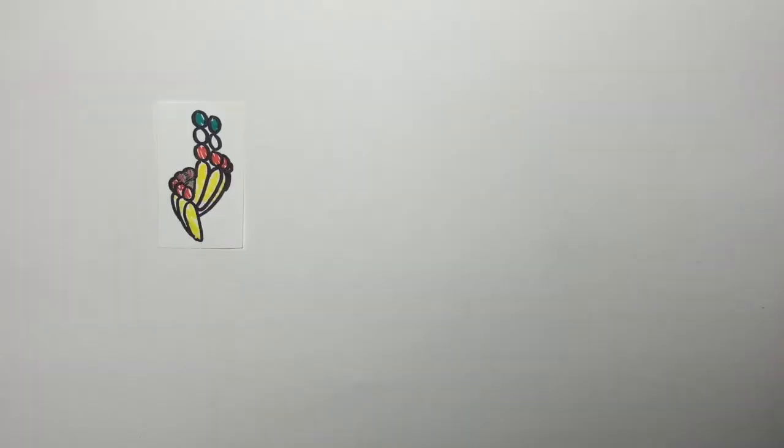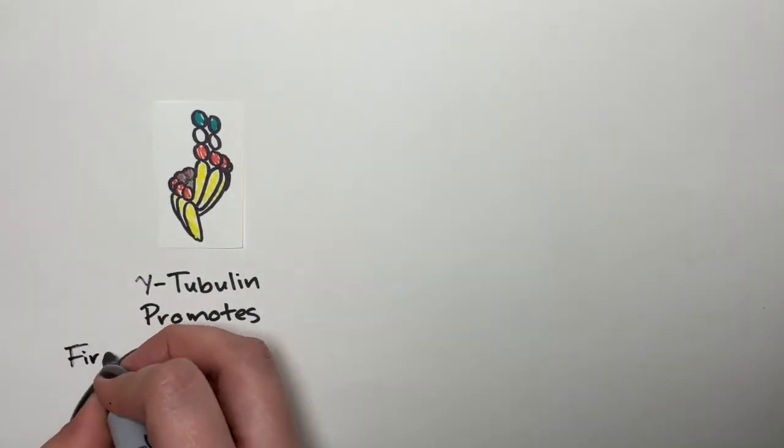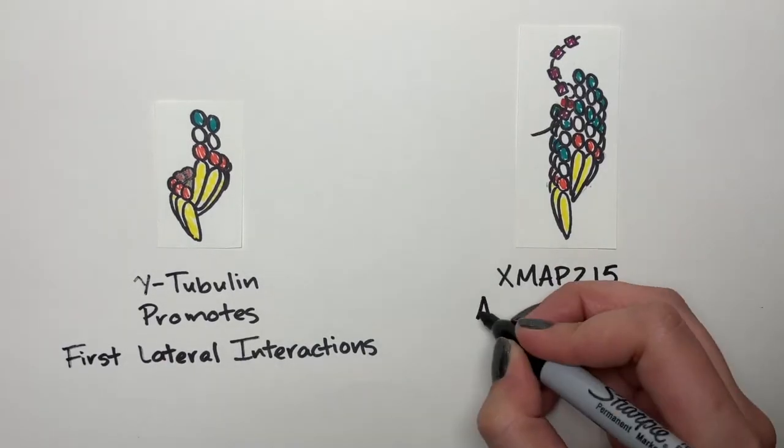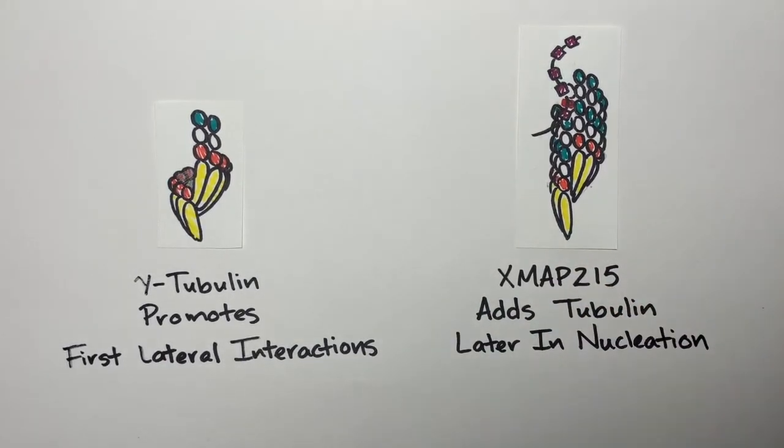Our work clarifies how microtubules are generated in the cell. We propose that gamma tubulin promotes the first lateral interactions of tubulin dimers, and that XMAP215 adds tubulin dimers only later in nucleation.